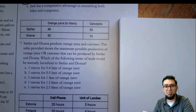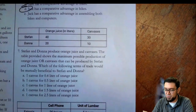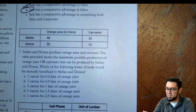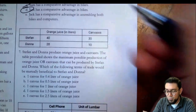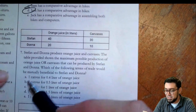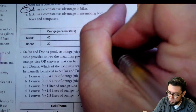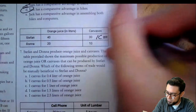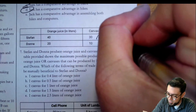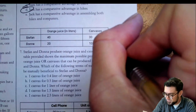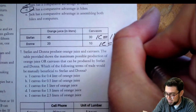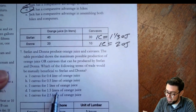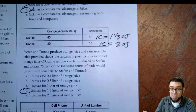Number seven: Stefan and Donna — we're given the data, so I don't have to build the table. What's the acceptable term of trade? I'm only working in the canvas column. Outside number over gives 40 over 30, which is one and one-third OJ for Stefan. One canvas for Donna equals two OJ. So I'm looking for one canvas priced in between these two numbers. One and a half is in between, so the answer is D.